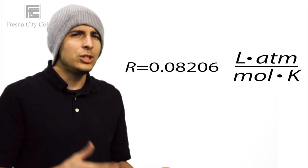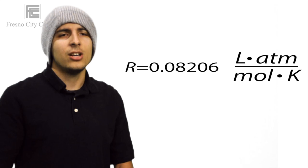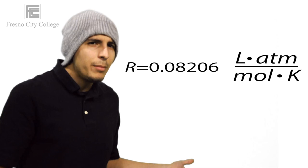Notice the units of the ideal gas constant. A very common mistake in ideal gas stoichiometry is forgetting to make sure the units are the same as R. If you have any questions or seek additional help, please stop by the Tutorial Center. Thank you for watching, and don't forget the assessment below.